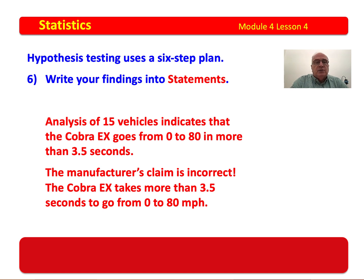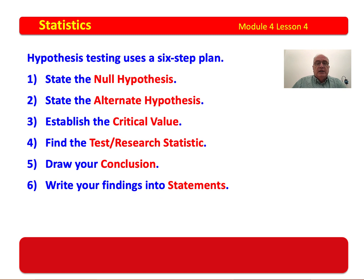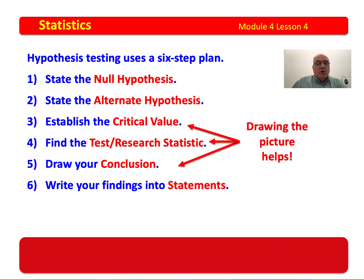The problem was done exactly like it would be done with a large sample, except that our critical value required us to use a Student's T-table. To do that, we found the Z-critical value, located it at the bottom of the table, identified the degrees of freedom, and read the table to find the critical value. The six-step plan: state the null, state the alternate, establish the critical value, find the test statistic, draw your conclusion, and write your findings into statements. Drawing the picture for steps 3, 4, and 5 really helps you do your work properly.